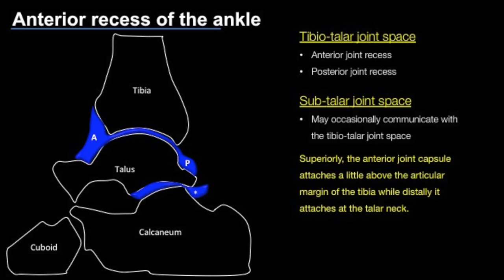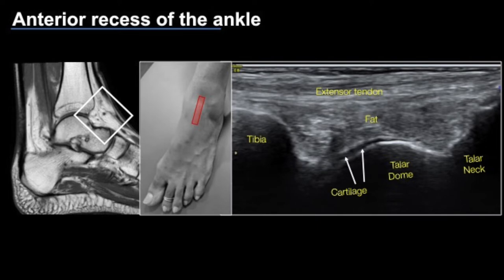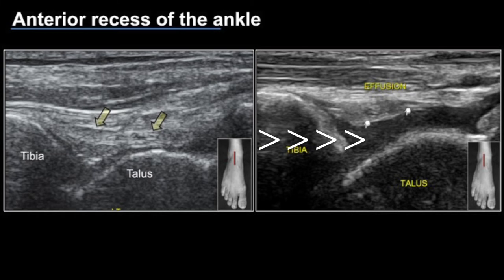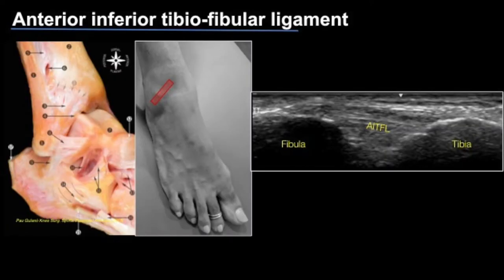We start scanning the anterior joint recess in the long axis by identifying the tibia, the talar dome, and the talar neck. Just above the talar dome we see a hypoechoic cartilage, and just anterior to that is an intra-articular but extra-synovial fat pad. Scanning from medial to lateral, we look for joint effusion. On the left side is the normal ankle joint showing the tibia, talus, and anterior fat pad, while on the right side the effusion has displaced the anterior fat pad anteriorly.